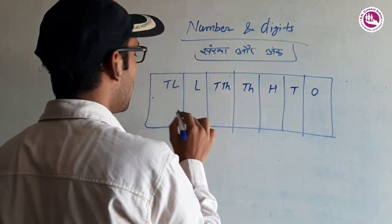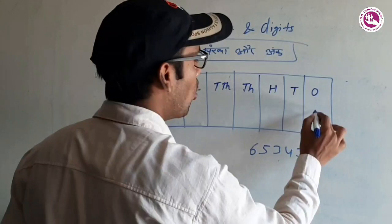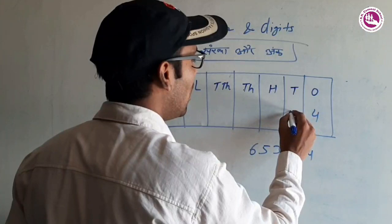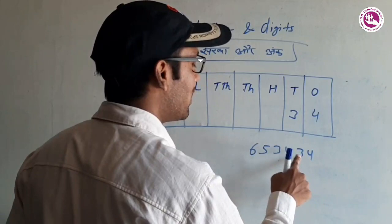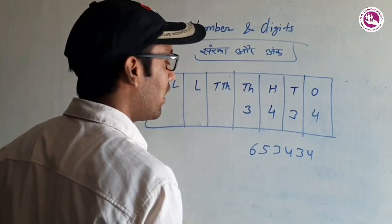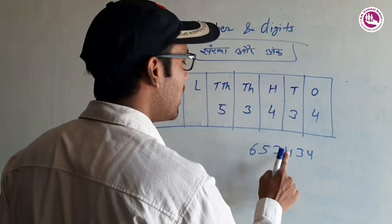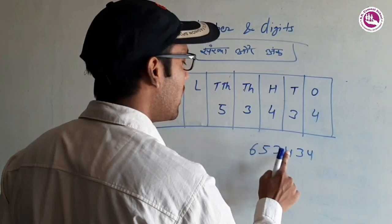If there is a number — 6, 5, 3, 4, 3, 4 — then what are the digits? We place them: ones place is 4, tens place is 3 giving 30, hundreds place is 4 giving 400, thousands place is 3 giving 3,000, ten-thousands place is 5 giving 50,000, and lakhs place is 6 giving 6 lakhs. We write 6 in the lakhs place.